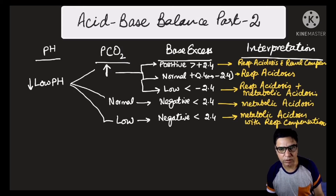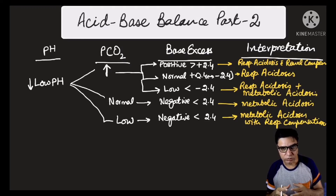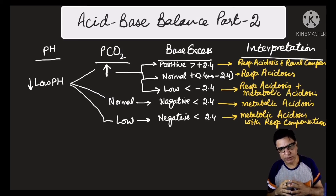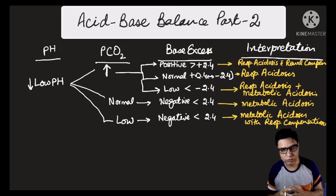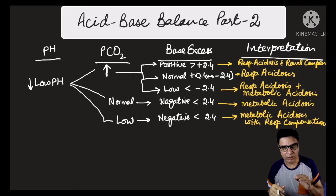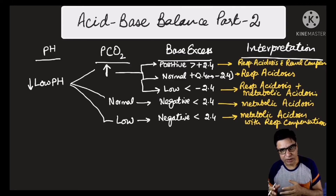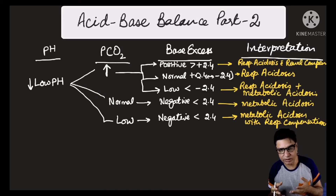This lecture is about the interpretation of base excess and how we use the values in the base excess to determine what's going on in terms of acid-base status of a child. As a quick review: in any acid-base interpretation we always start by looking at the pH. The normal pH is between 7.35 to 7.45. If it is below that we call it acidemia; if it is beyond that we call it alkalemia. Then you look at the pCO2 levels — if pH is down and pCO2 is up, moving in opposite directions, it's a respiratory problem.